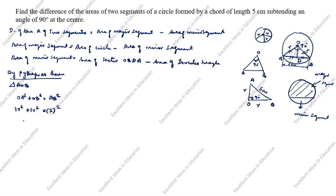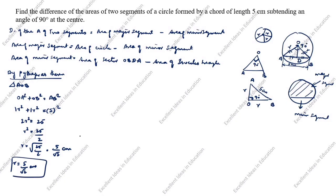R² = 25 divided by 2. R is equal to root of 25 by 2, which equals 5 divided by root 2 centimeter. So the R value we know is 5 by root 2 centimeter. OA = OB = 5 by root 2 centimeter.